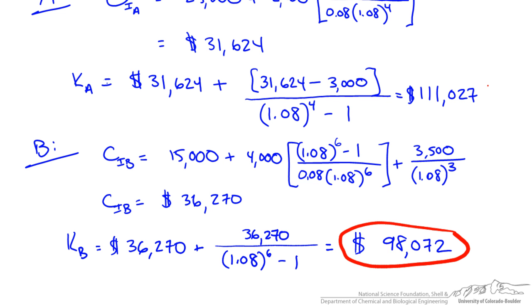What does this mean? First, reactor B is the better investment because it has a lower capitalized cost. When we do a present worth analysis for comparing equipment purchases we had to make sure everything was on the same time scale. In this case we don't.